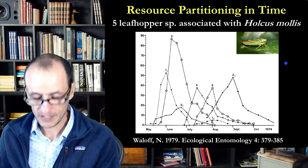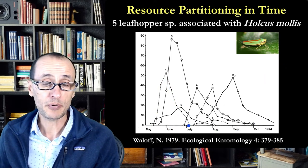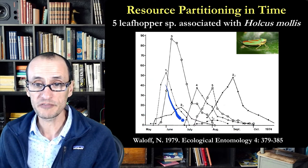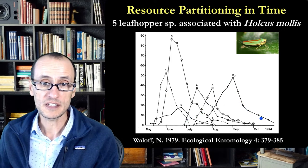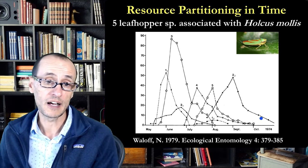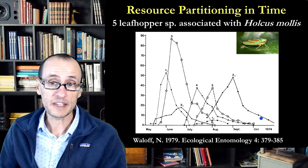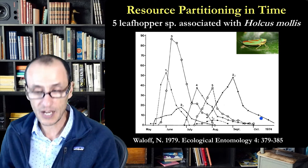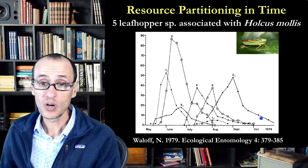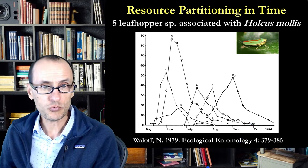Similarly, leaf hoppers may be present at different times during the season. Over the course of the summer from May until fall, different species emerge either early or, like this one here, emerge late. This temporal displacement may allow species to minimize competition between them. Whether this is actually a consequence of competition or something completely different is hard to test, but these are the kinds of data people point to when arguing that competition is important in herbivorous insect communities.